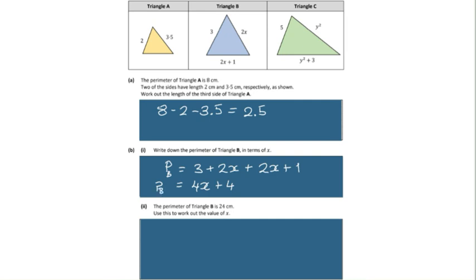So that perimeter now Pb is equal to 24 so we've got to solve for x. People like solving puzzles. Now we're solving algebra.